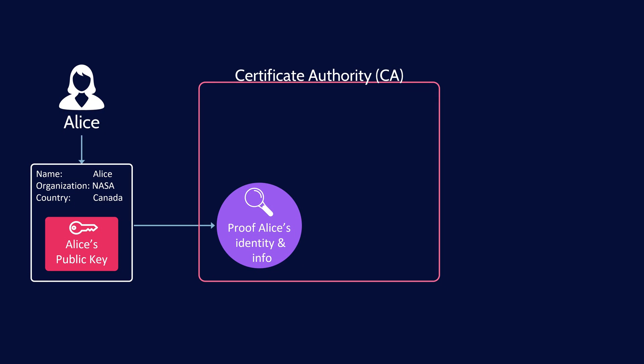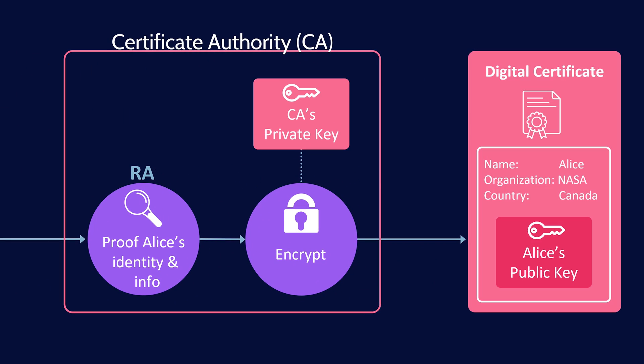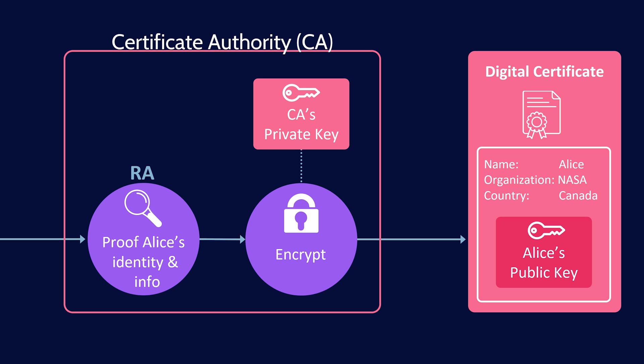If Alice says she is Alice, the CA confirms she is in fact Alice — this is called identity proofing. The entity that does the identity proofing is often referred to as the registration authority, or RA. Once Alice's identity has been proofed, the CA encrypts the information she provided along with her public key using the CA's private key. Oversimplified, a digital certificate contains the name of the owner and a copy of their public key, all encrypted with the CA's private key.